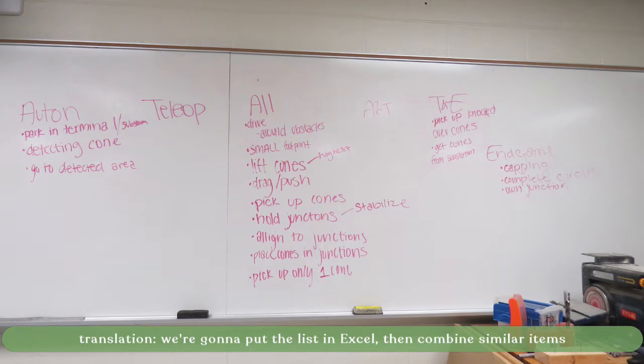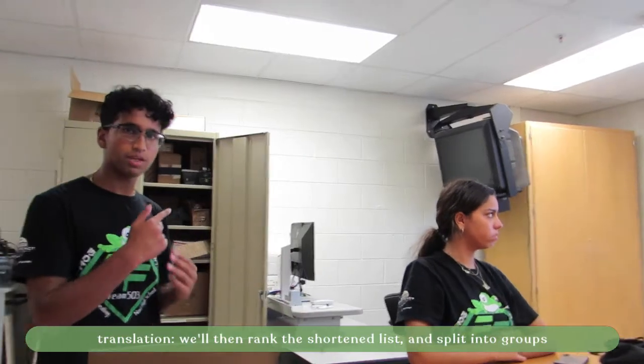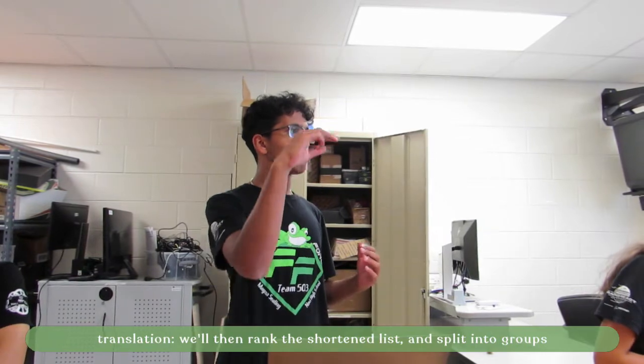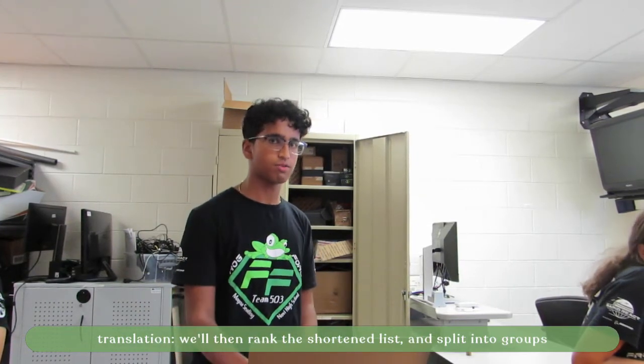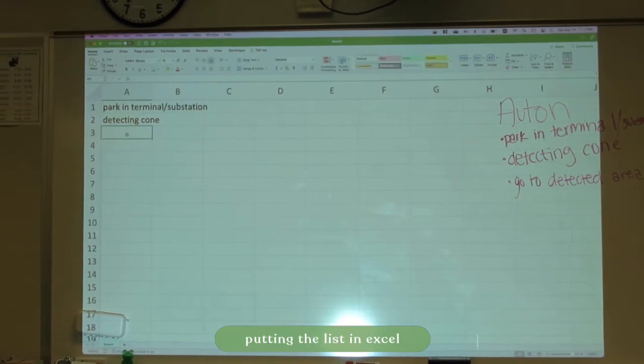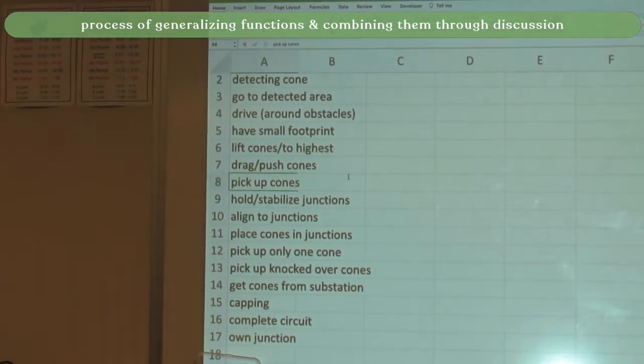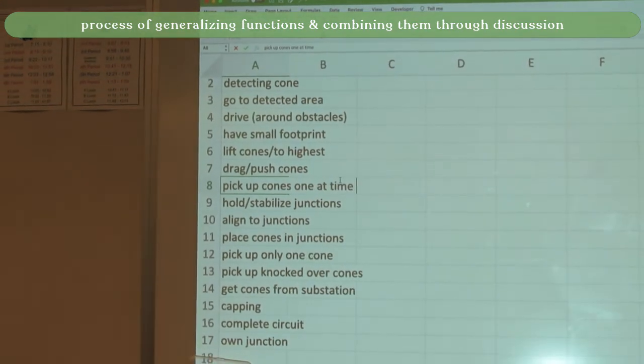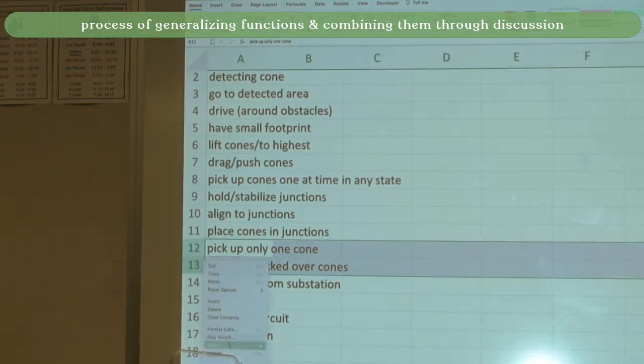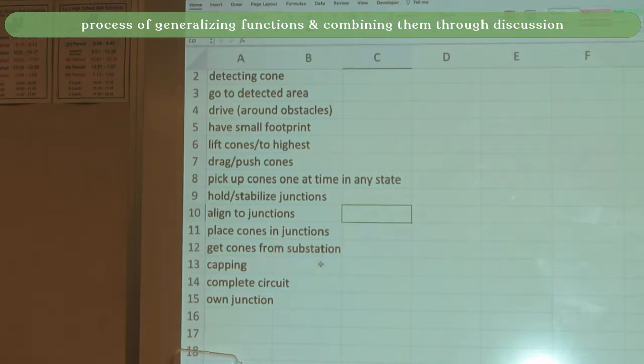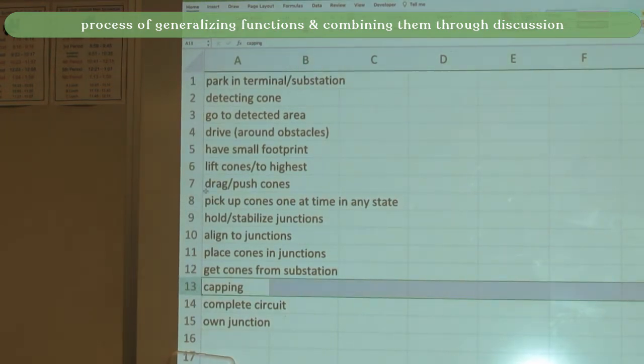We're going to list out all the functions in one long list, then rank them. If some can be combined together, we'll do so. Then we'll divide them up into several groups so we can split up and work on ideas individually. We can generalize some functions, like picking up cones one at a time in any state. We could also group place cones, capping, and own junction together - at least capping and place cones can definitely be combined.